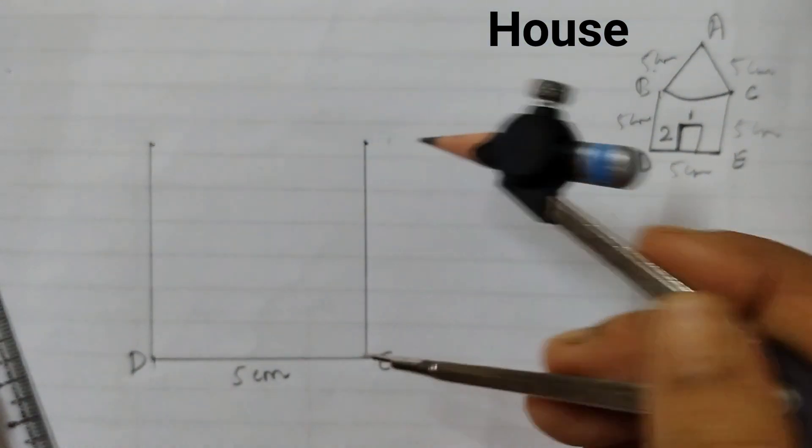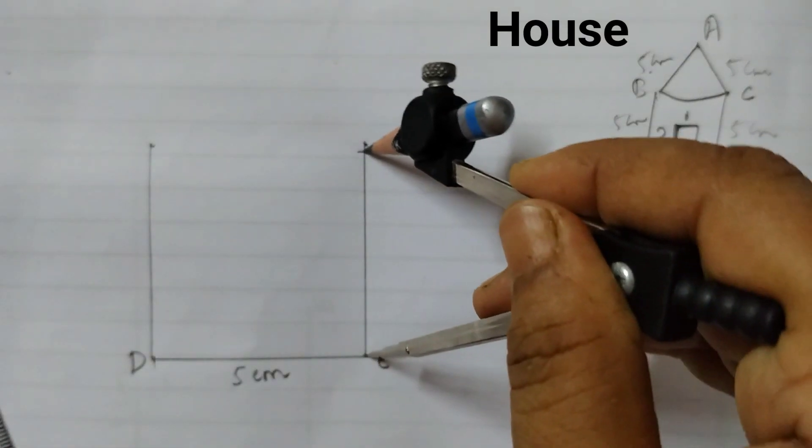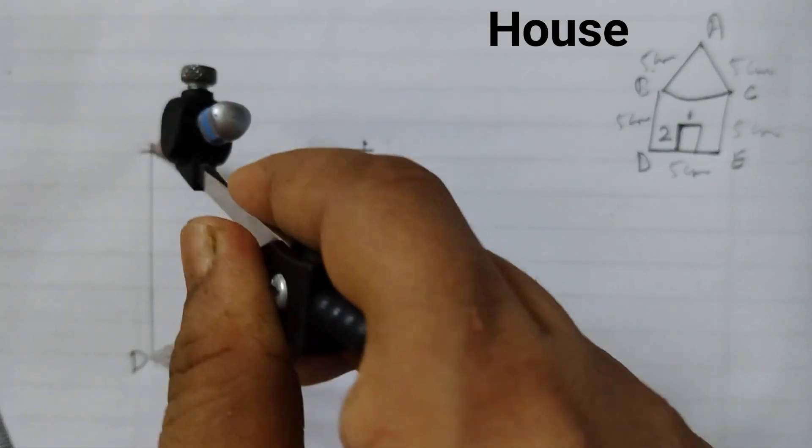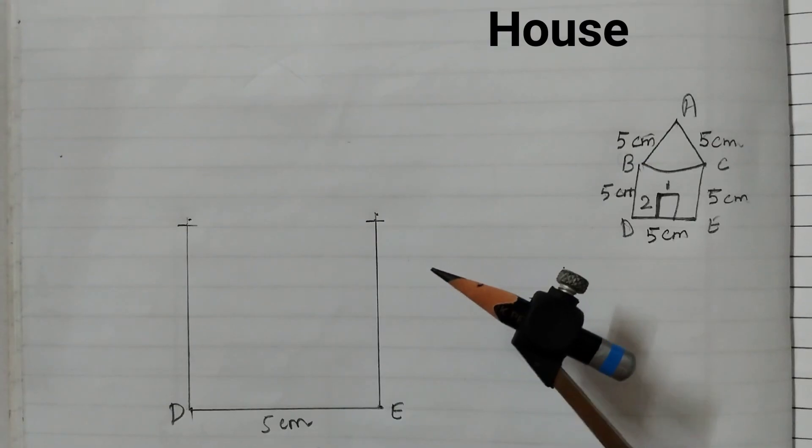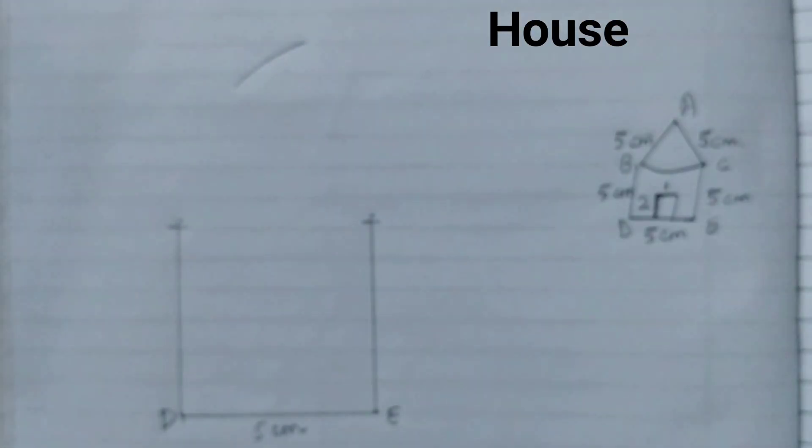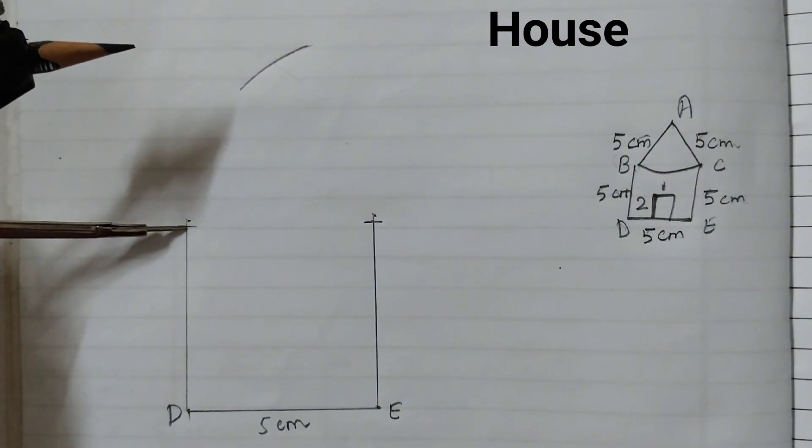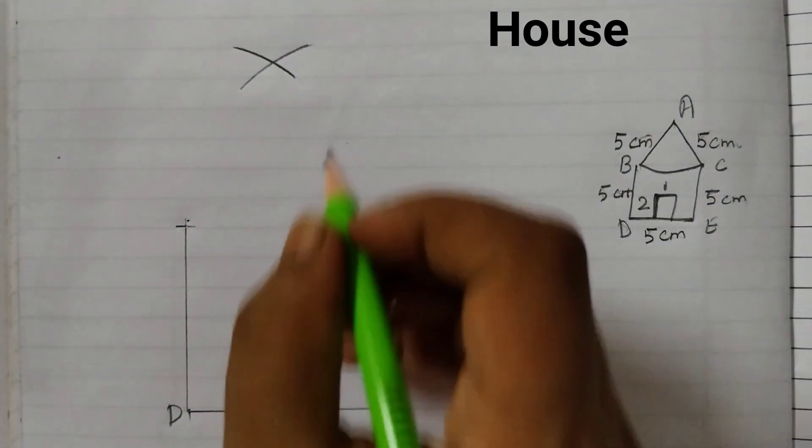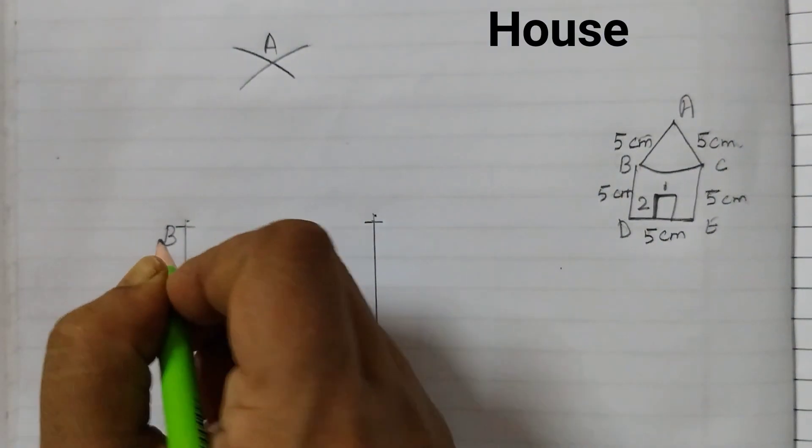So now we have to cut an arc. Keep your compass here and cut an arc from this point. Again from this point cut an arc. So I have taken the compass with the same measurement 5 cm. I will cut an arc from this point like this and from this point cutting this arc. This point is A. This is B. This is C.